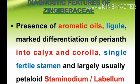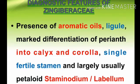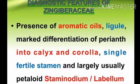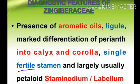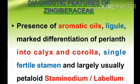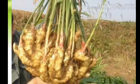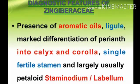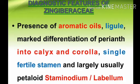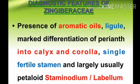In the Zingiberaceae family, the diagnostic features include the presence of aromatic oils and oleoresins, marked differentiation of perianth into calyx and corolla, single fertile stamen, and a largely petaloid staminodium or labellum. The aromatic oils are abundant in rhizomes and in much smaller amounts in other aerial parts. These aromatic oils are present in special secretory ducts called lysigenous ducts or schizogenous ducts. The next diagnostic character is the ligule.